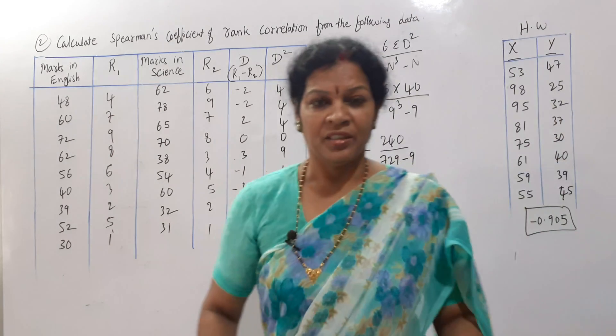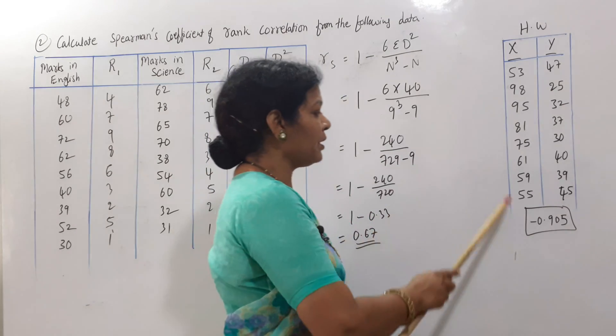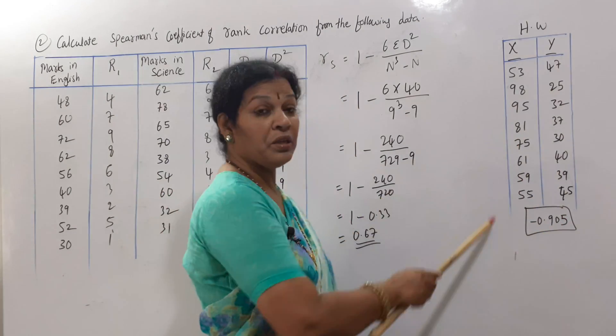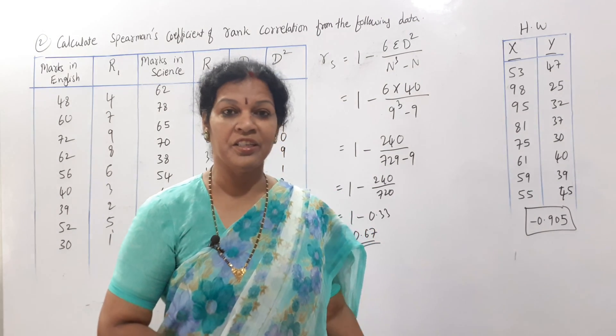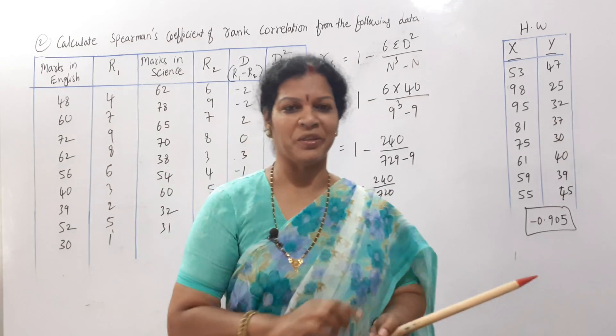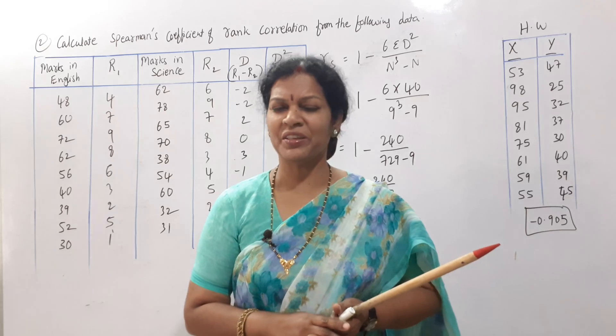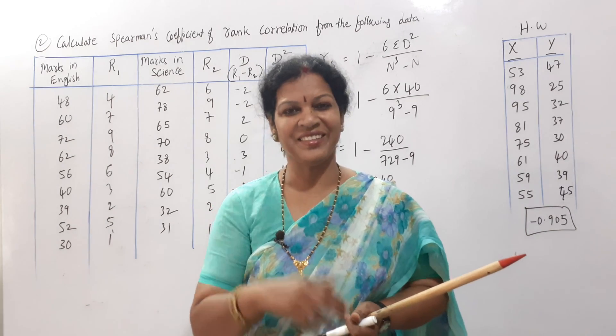If you understood, here is the homework problem. Your answer must be minus 0.905. So, here also you have to give the ranks. Give the ranks. Then, calculate D. D square like this problem only. How many of you are getting the answer? Let me know in the comment box. By the way, check out the playlist. Everything is free of cost. Don't forget to share these videos. Stay connected. Good luck.